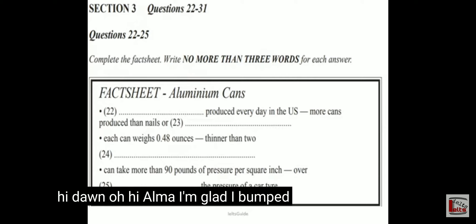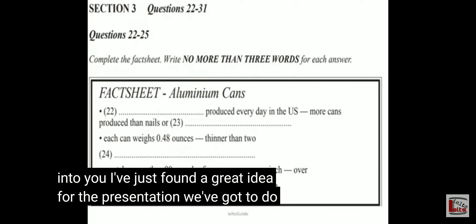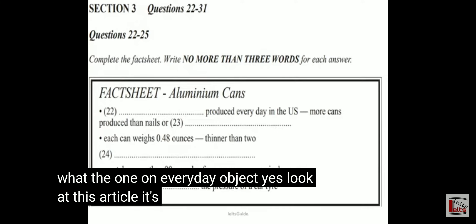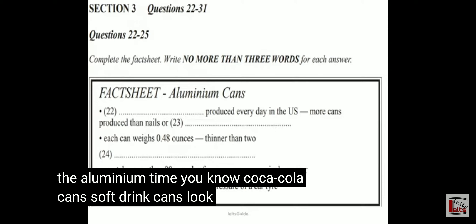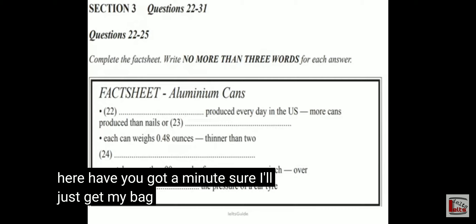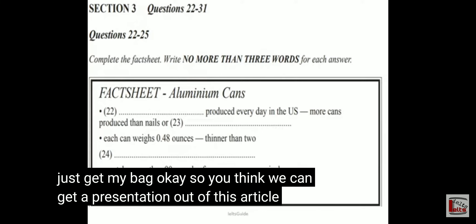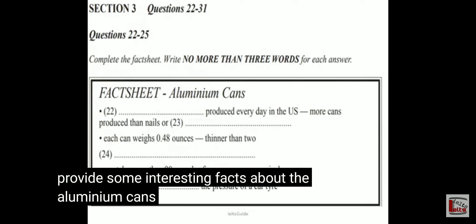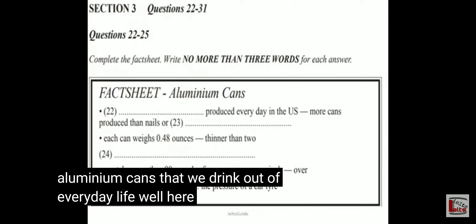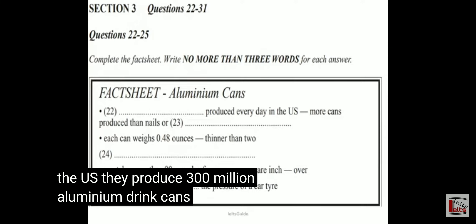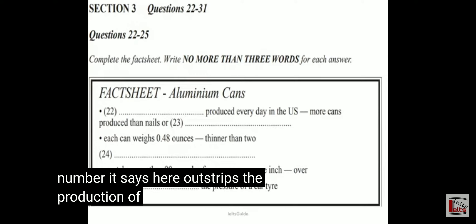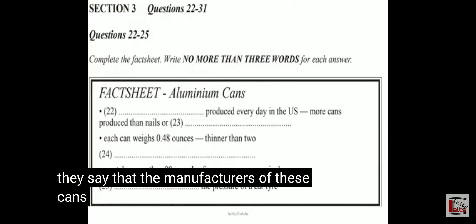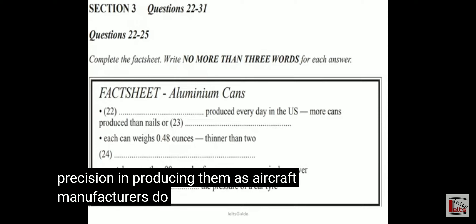Hi Dawn. Oh, hi Omar. I'm glad I've bumped into you. I've just found a great idea for the presentation we've got to do for Dr Banks next month. What, the one on everyday objects? Yes, look at this article — the aluminium Coke can. Let's sit down. So you think we can get a presentation out of this article? I'm sure we can. First of all, we can provide some interesting facts. In the US, they produce 300 million aluminium drink cans each day — outstripping the production of nails or paperclips. Manufacturers exercise as much precision producing them as aircraft manufacturers do when making the wing of an aircraft.